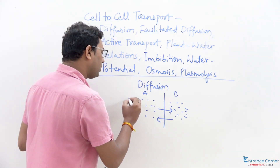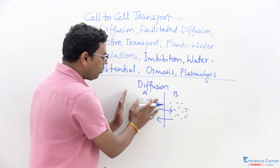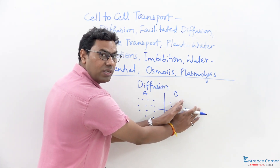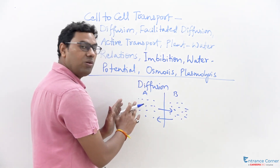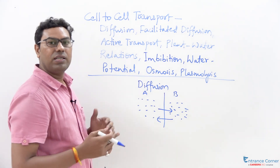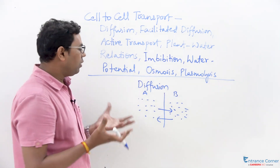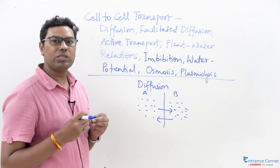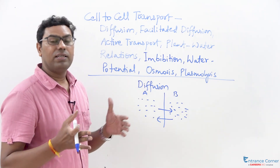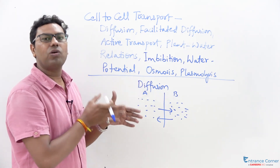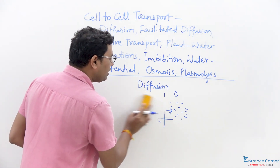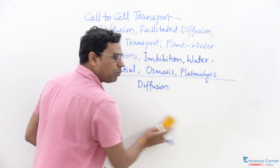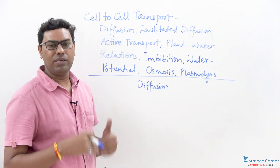Diffusion happens from higher concentration to lower concentration. So if the higher concentration of a particular solute is here and the lower concentration is there, water will move from that direction to the other. Diffusion is completely a slow process based upon the concentration gradient, and it takes place in both gaseous mode and aqueous conditions.